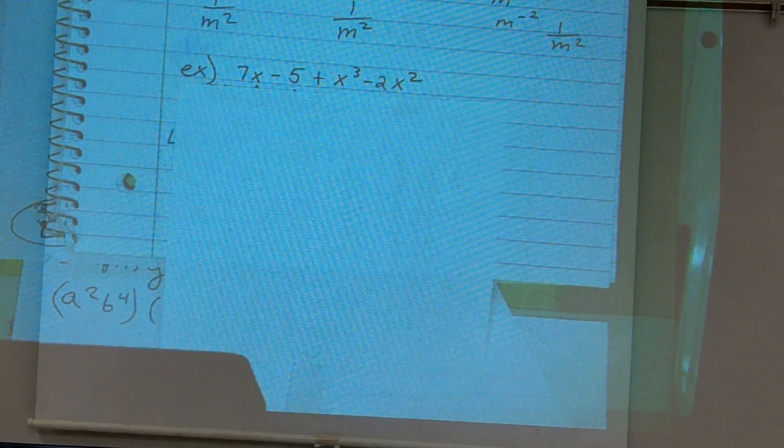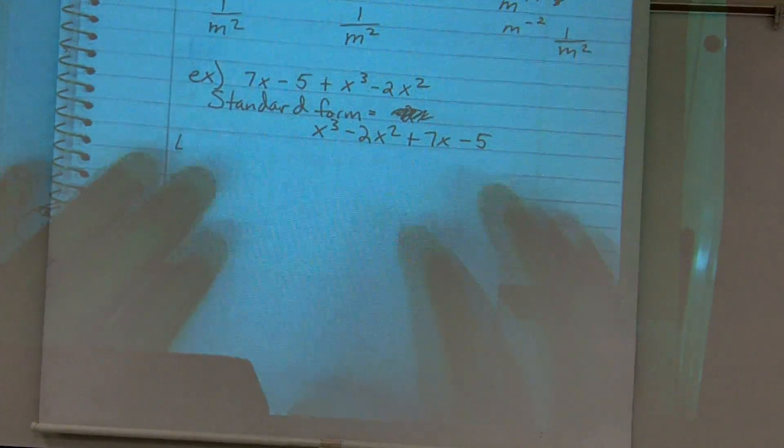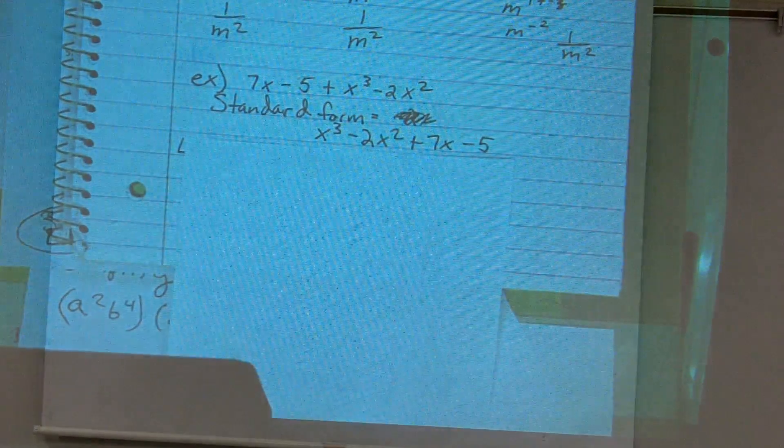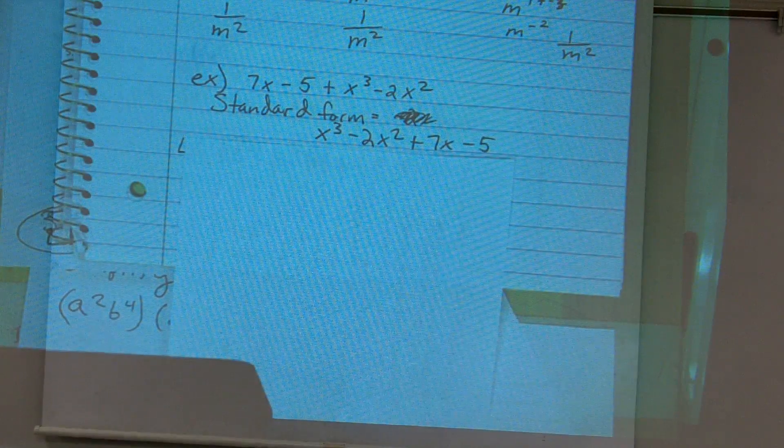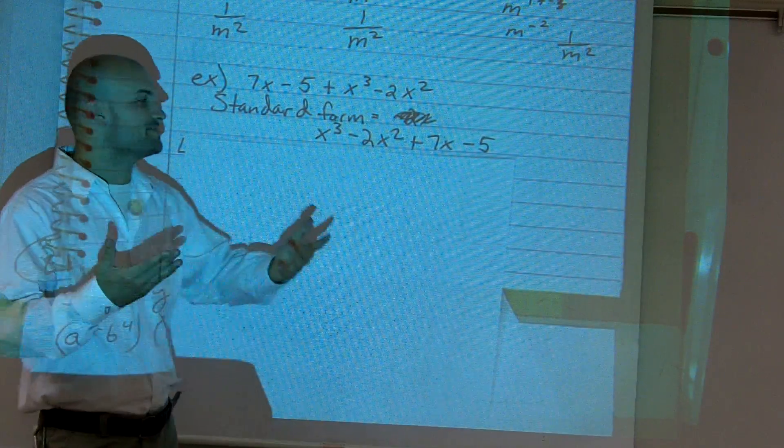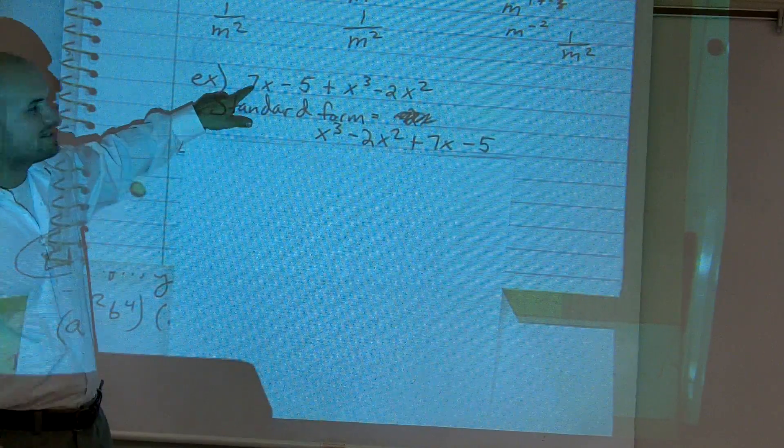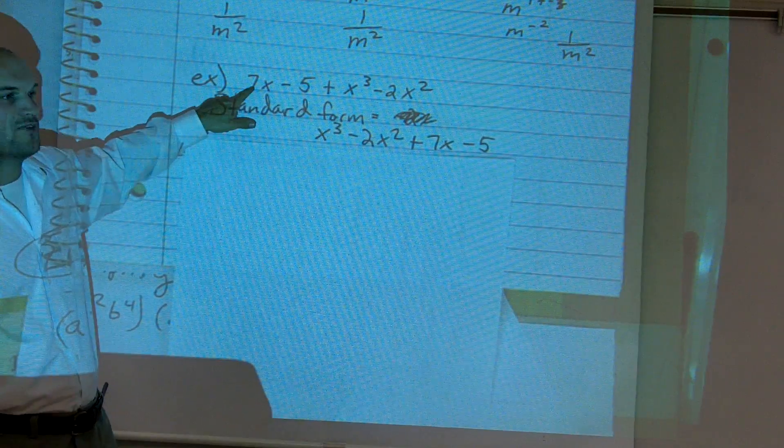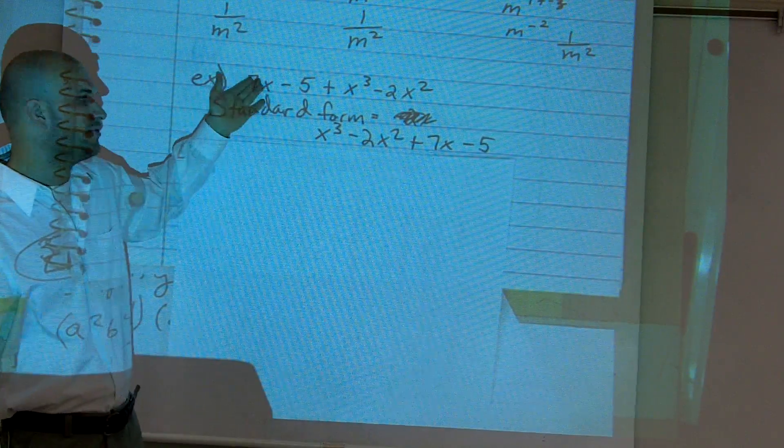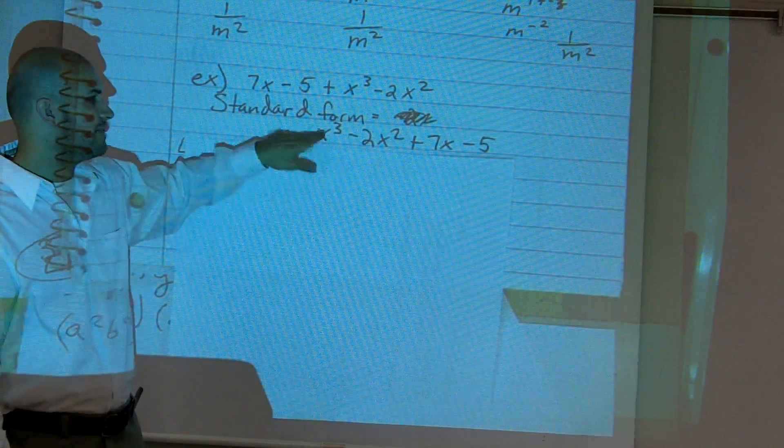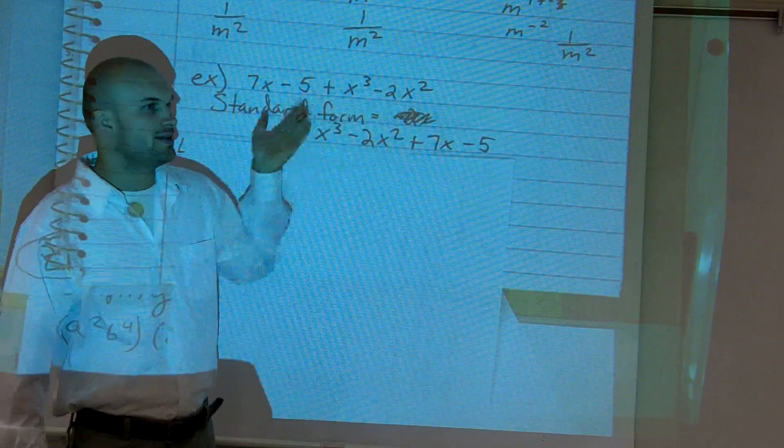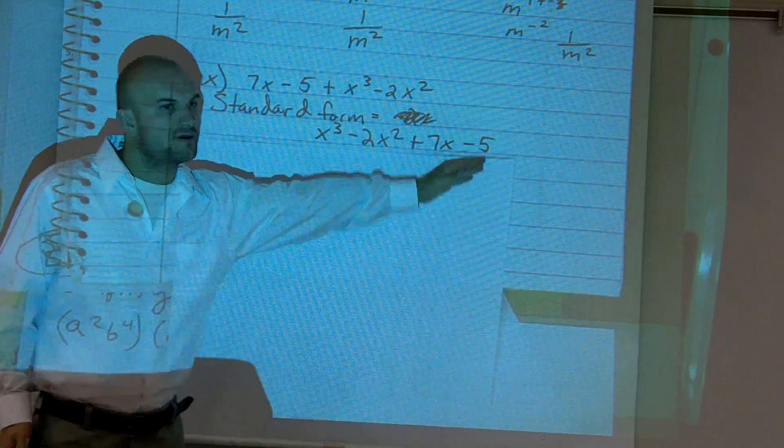So when I put them in descending order, what I get is x³ - 2x² + 7x - 5. The big mistake that students usually make is they see the highest coefficient, the number in front of the variable, and they want to put that as the first number. You've got to make sure you look at the exponents and put them in descending order. Our constants are always at the end.